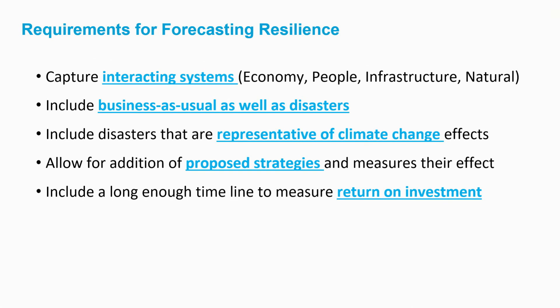First, capture interacting systems. As engineers at Atkins, we focus a lot on flood modeling or environmental modeling, and we tend to keep it in silos. What we understood with this model is that we needed to understand how everything interacted — if a flood or disaster occurred, how would it actually impact people, the economy, and natural systems? Second, we looked at business as usual as well as disasters. We want to know over a 30-year timeframe how the city does at all times, and we want to include disasters that are representative of climate change. The city is changing over the next 30 years — it's developing and growing, but so is the climate. We need to model all of it together to understand the impacts.